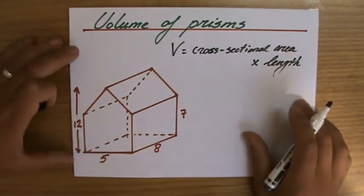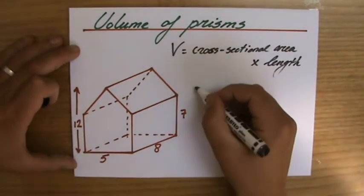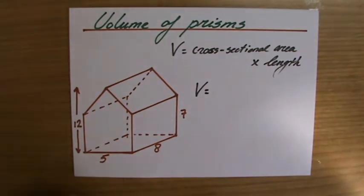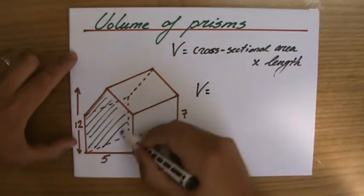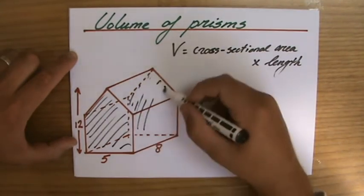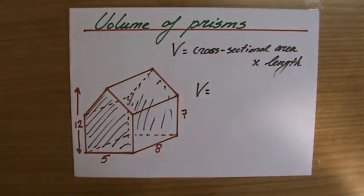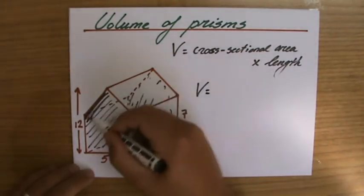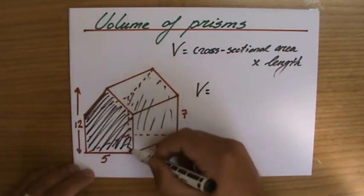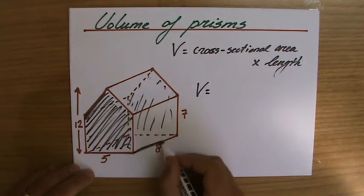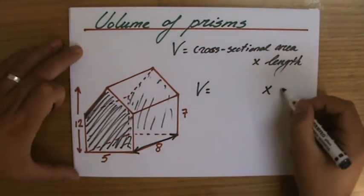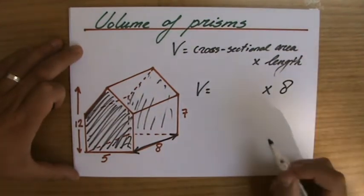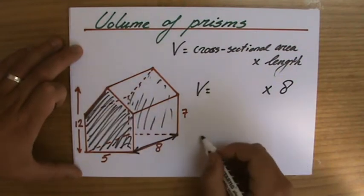A prism has two sides which are identical and parallel. Those are this side and then at the back — like a house, you see that. So if I find the area of one of these sides, I times it by the length, which is the distance between those two end sides. So the length is going to be 8. Let me put that there already — times 8 — and I'm just going to find the area. Let me draw that house for you.